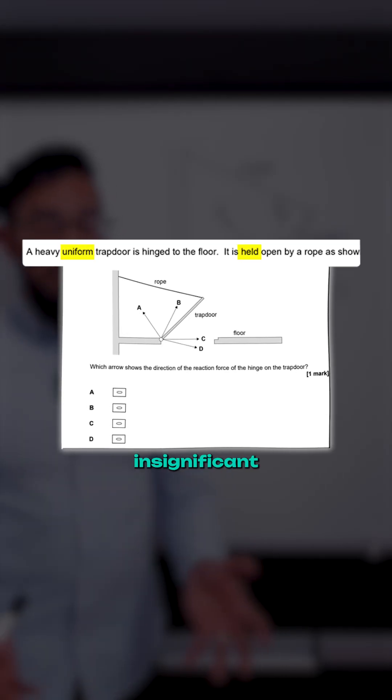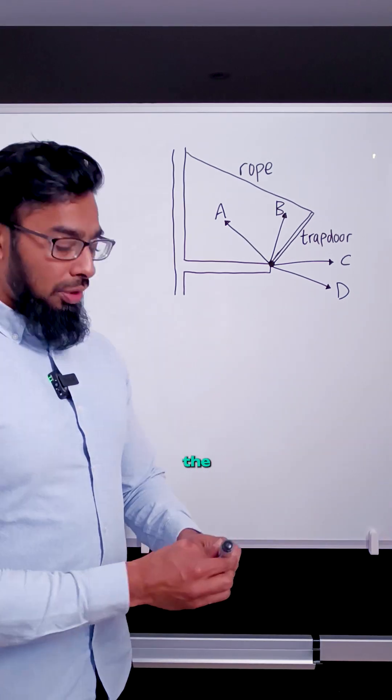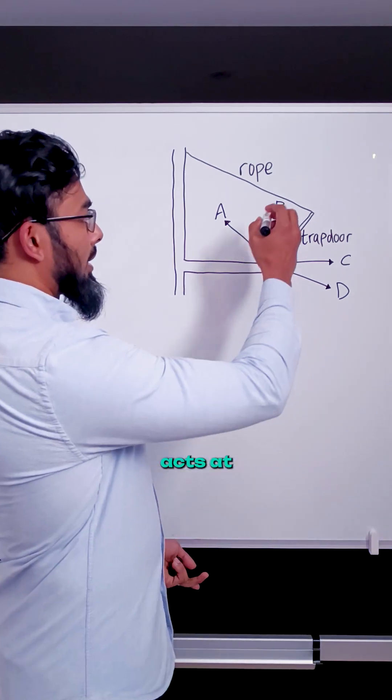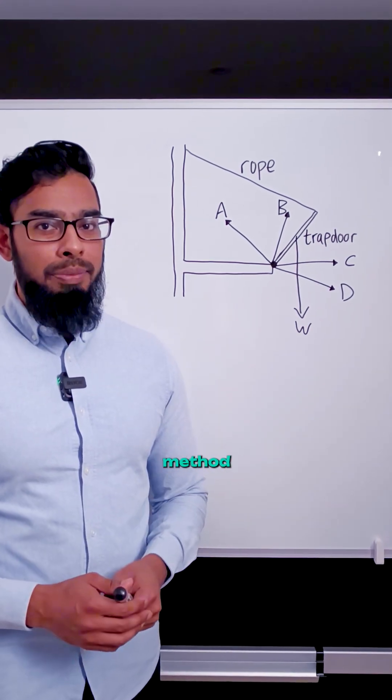These words may seem insignificant, but they tell you two very important steps to add to this drawing. The weight of the trapdoor acts at the centre, and the second thing is that the trapdoor is in equilibrium. So how do we apply this tip-to-tail method?